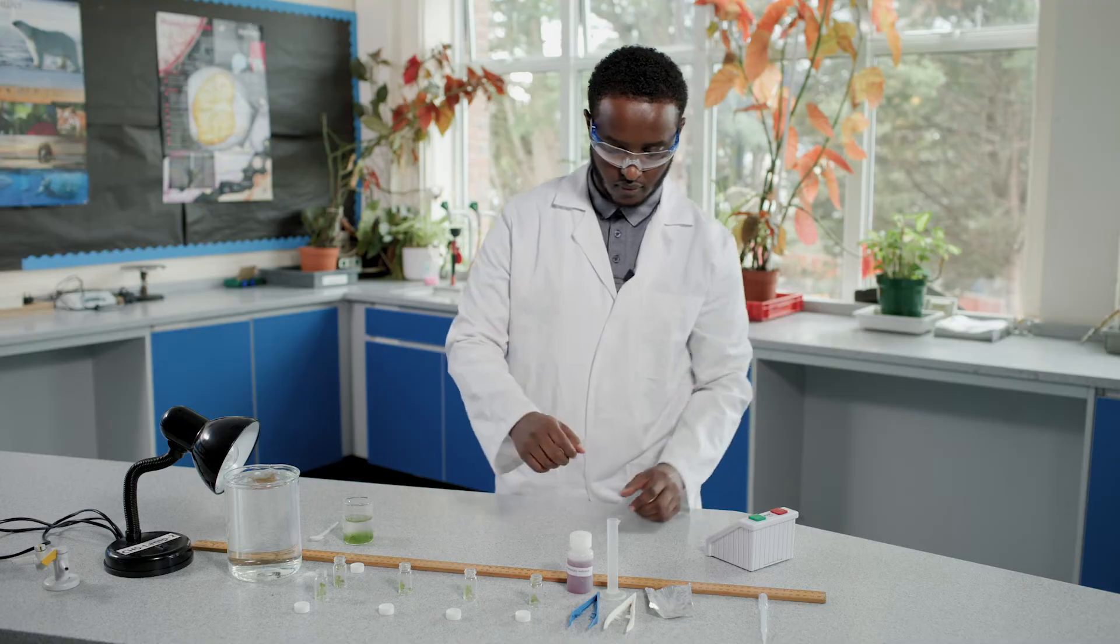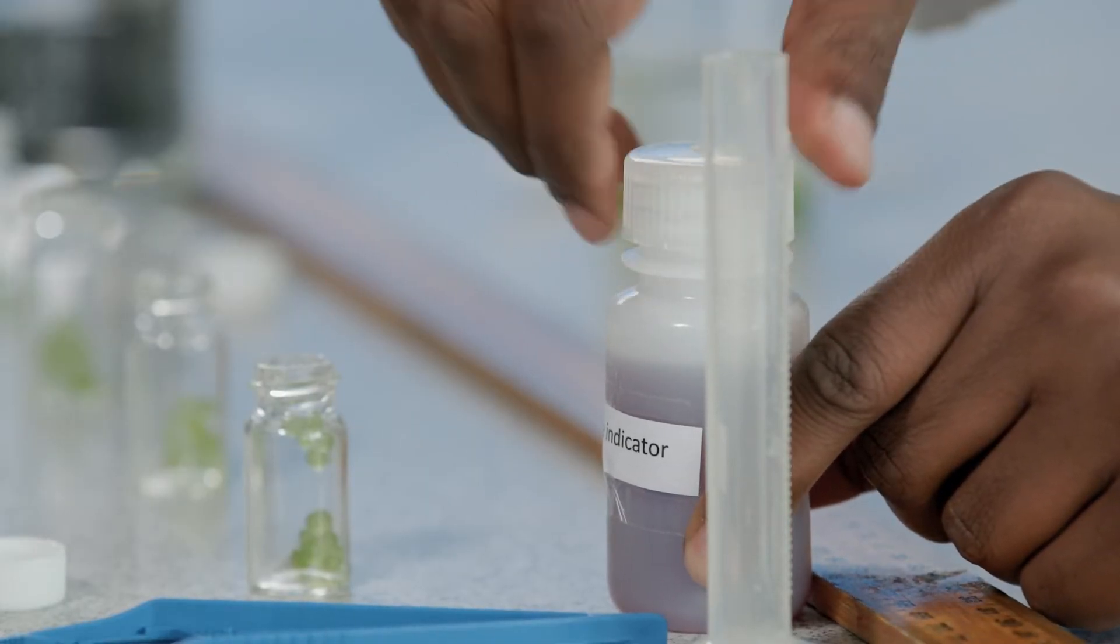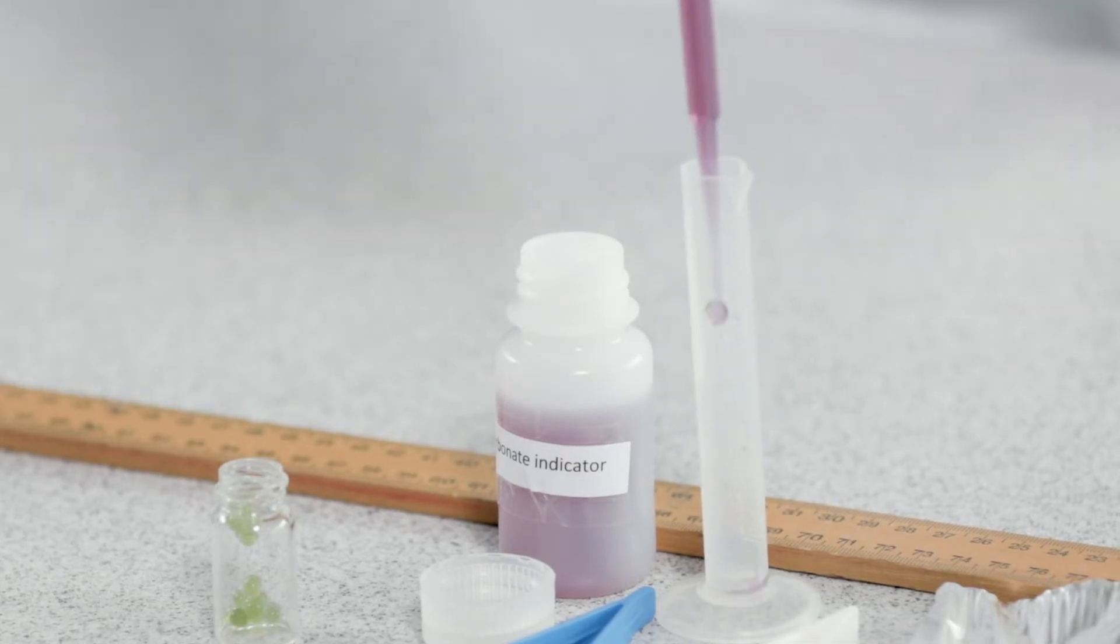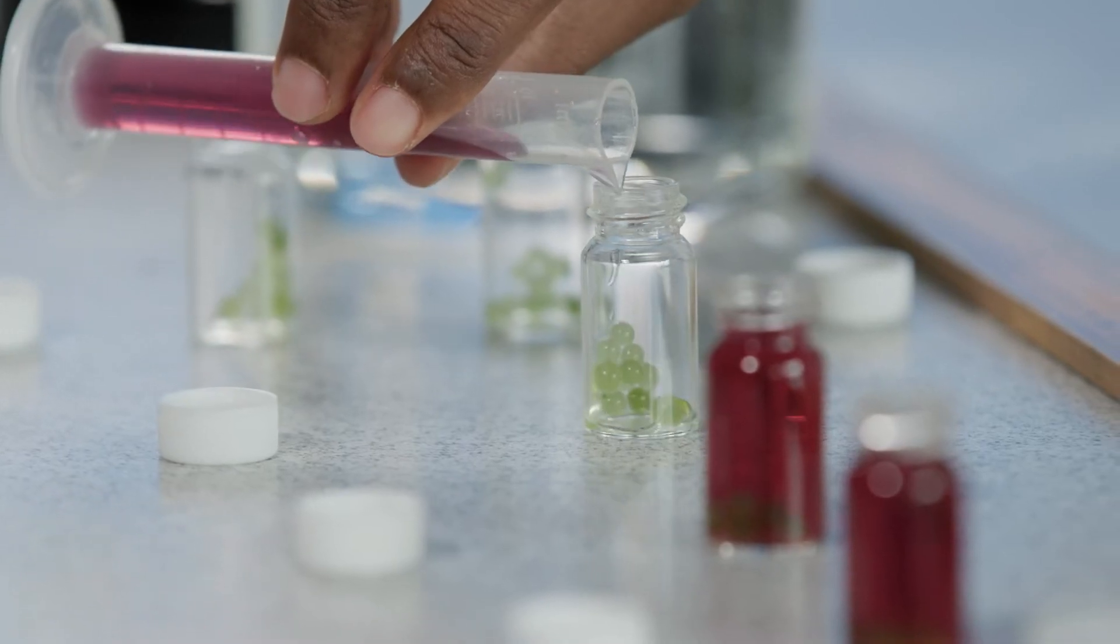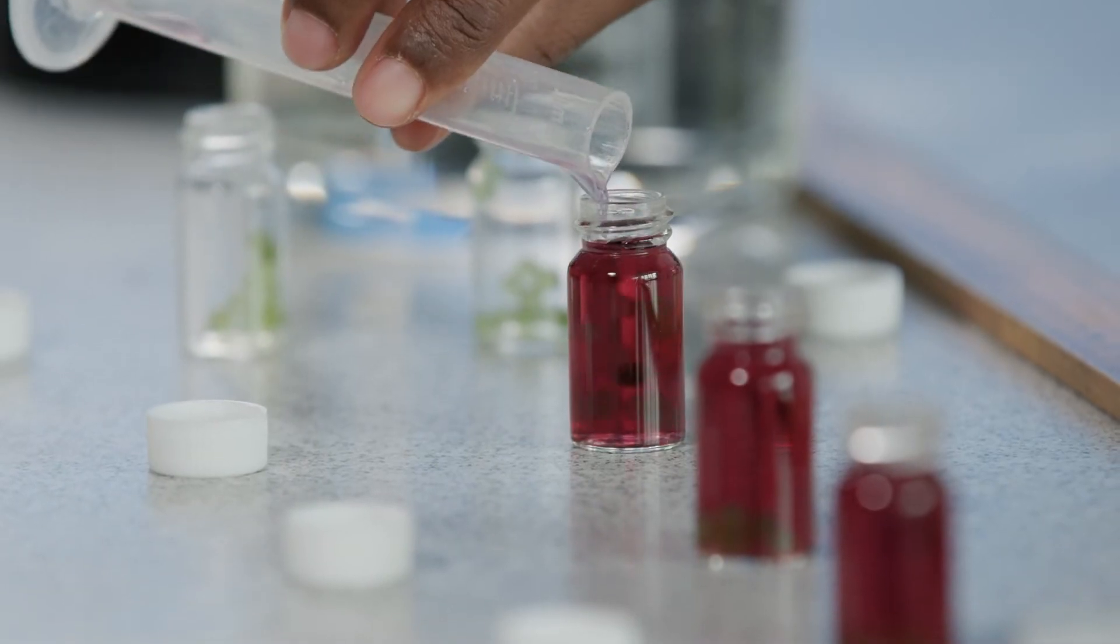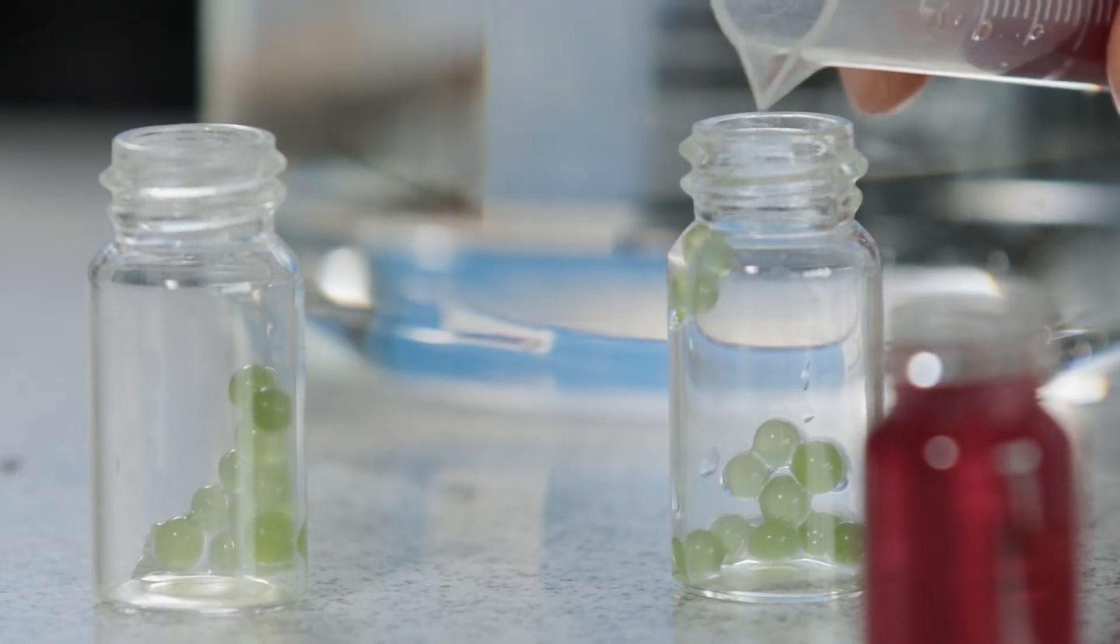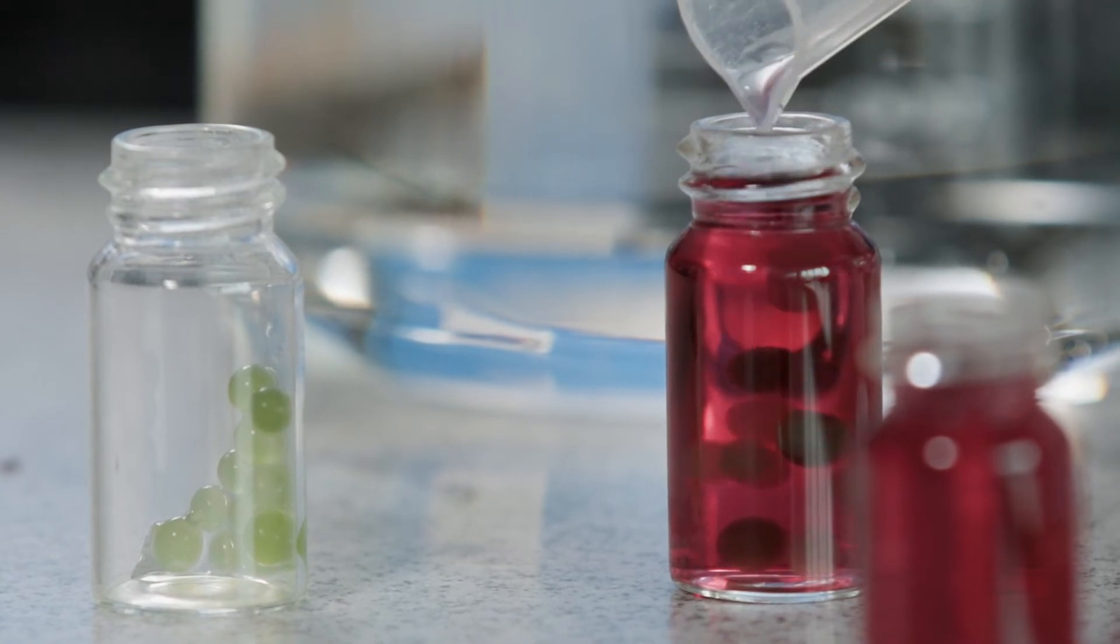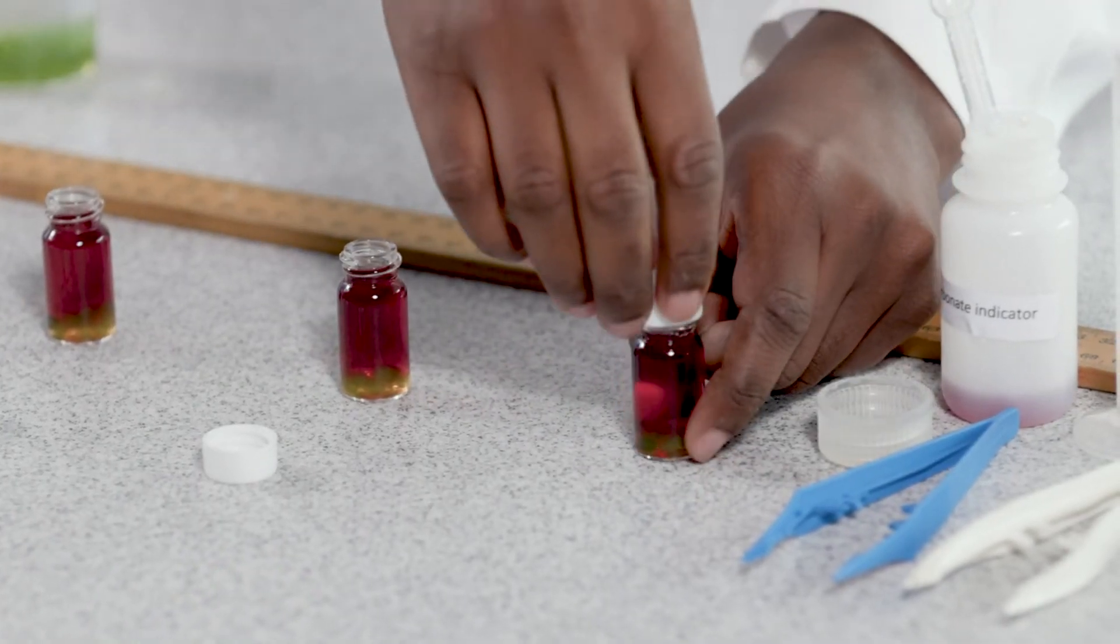Then add the same volume of indicator solution to each bottle using a measuring cylinder and pipette. Put on the bottle caps.